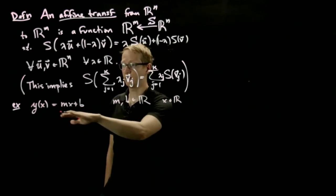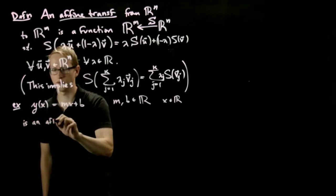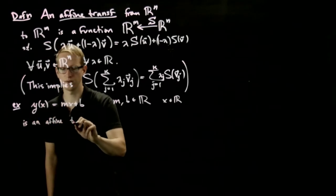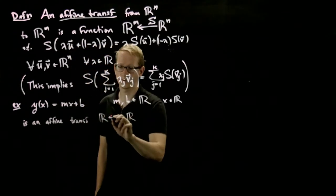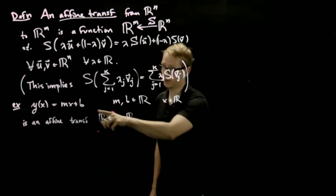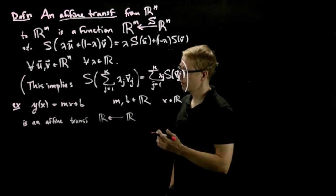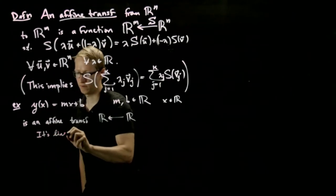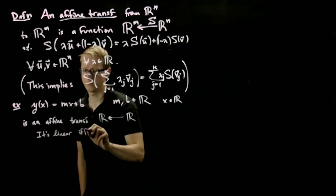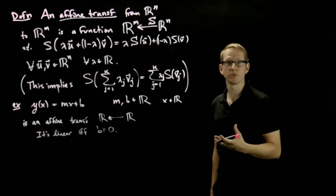Then this is an affine transformation from R to R, because it takes a real number x and gives us another real number. And it's linear if and only if b equals 0, linear in the sense of being a linear transformation.